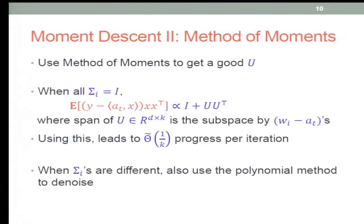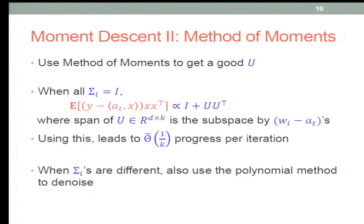You come up with some smart way of moment descent for doing that. A simple observation is that if all the covariance matrices are identity, and you have this observation about the moment times your design vector, by taking expectation that gives you a span of subspace by wi minus ai. You use some concentration results to make sure that it's actually close to what you want. Using this leads to order 1 over k progress per iteration. You repeat the procedure and it doesn't give you additional d factor. That finishes the proof for the warm start.